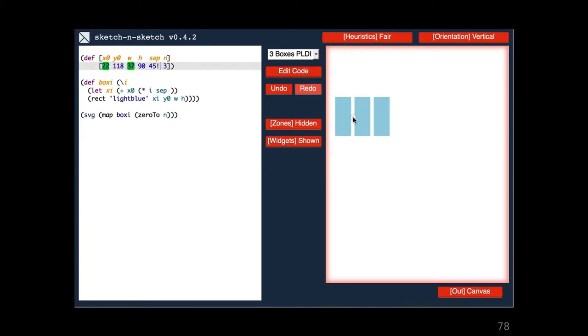We're not limited to just changing the box's position. We can also change the box's width and height. But what about changing the number of boxes? There's nothing on the canvas that we can drag to change n. For a design parameter such as this, we allow the user to annotate the number with a range, which tells Sketch and Sketch to draw a slider that controls the number.